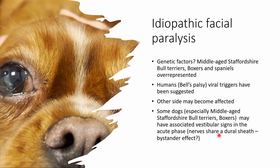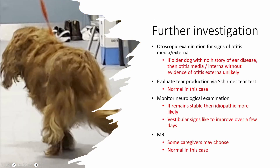Based on signalment — the breed and age — this is most likely idiopathic facial nerve paralysis. We see it more commonly in certain breeds, especially middle-aged Staffordshire Bull Terriers, Boxers, and Spaniels of all breeds, suggesting a genetic factor. In those breeds you often have associated vestibular signs in the acute phase, and I believe this is because the nerves share a dural sheath — when the facial nerve swells and is inflamed, it starts to affect the vestibular nerve. For investigations, we'd want otoscopic examination, though spontaneous middle ear infection without outer ear signs is unlikely.